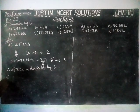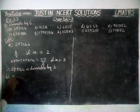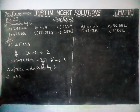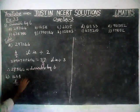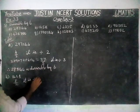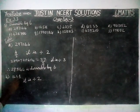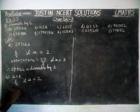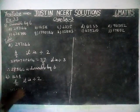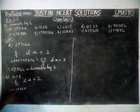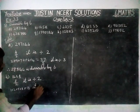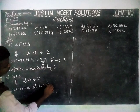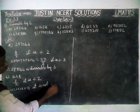Next, option B. Here, the 1's place is 8. This 8 is divisible by 2. Therefore, it is divisible by 2. Next, we have to add all these digits: 1 plus 2 plus 5 plus 8 plus 8, which equals 16. Wait — 1 plus 2 plus 5 plus 8 is 16. This 16 is not divisible by 3, so it is not divisible by 3.